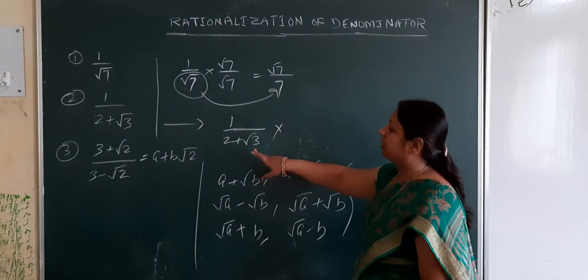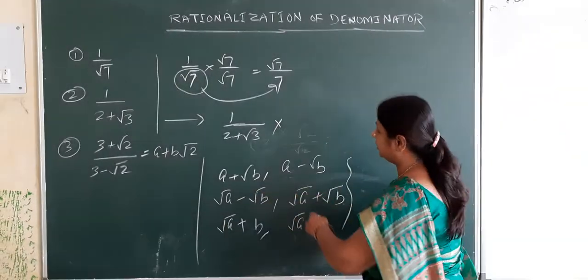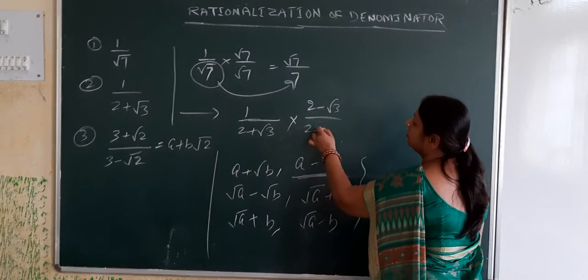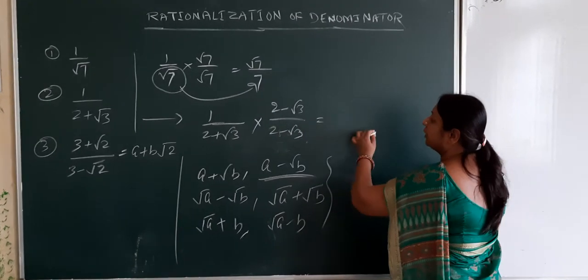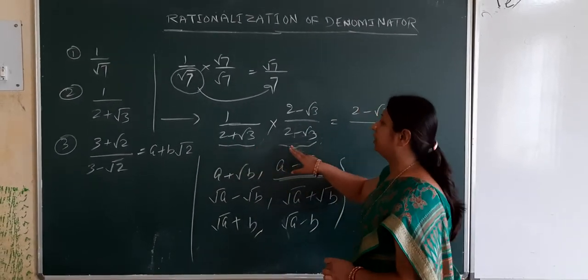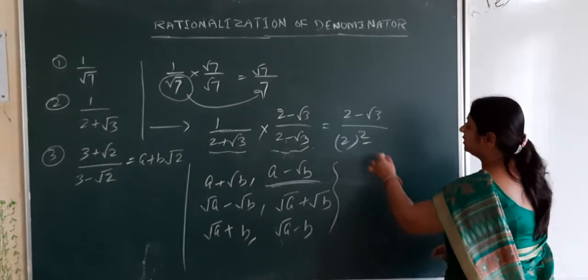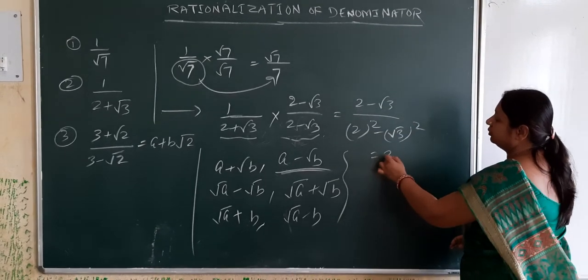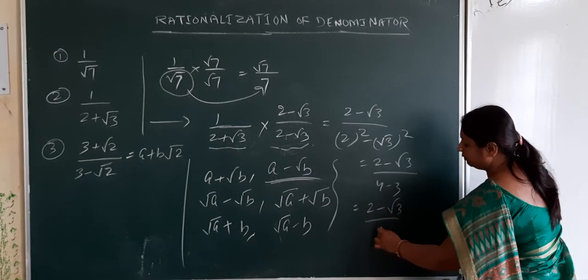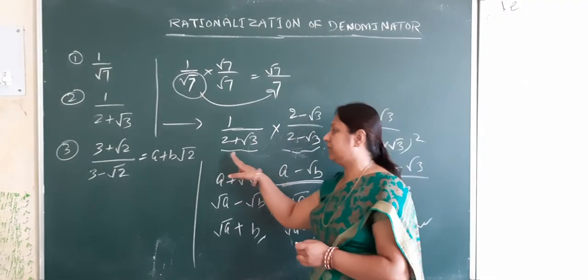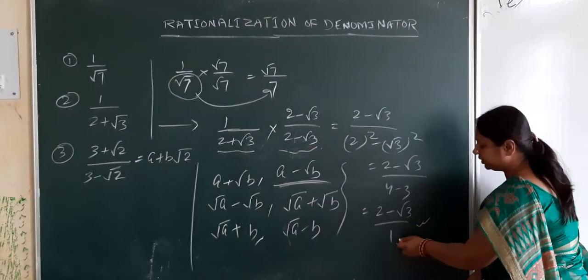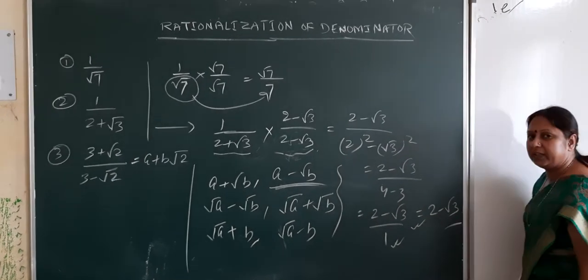So for 1 by (2 plus root 3), since it is of the form (a plus root b), its rationalizing factor will be (a minus root b), which is (2 minus root 3). We multiply by (2 minus root 3) over (2 minus root 3). Using the identity (a plus b)(a minus b) = a squared minus b squared, we get (2 minus root 3) divided by (4 minus 3), which equals (2 minus root 3) over 1. So the result is simply 2 minus root 3.